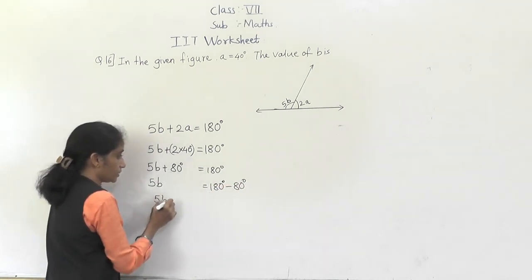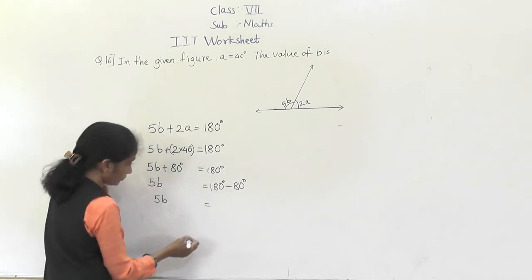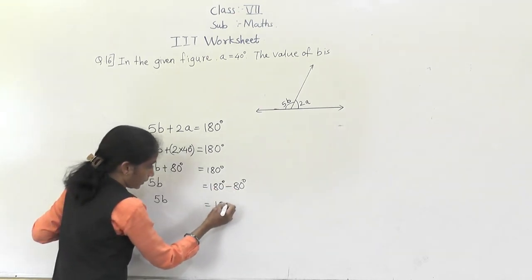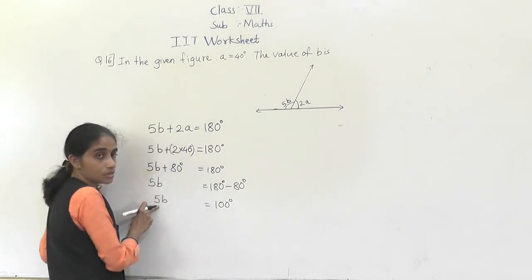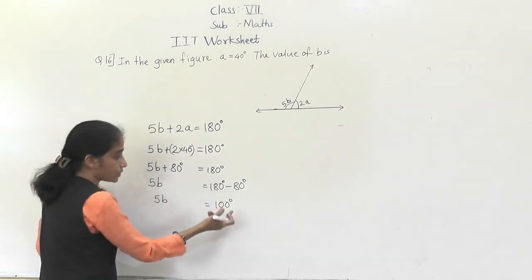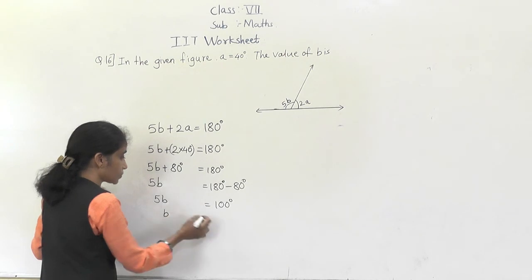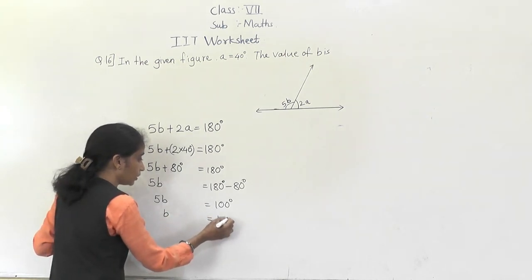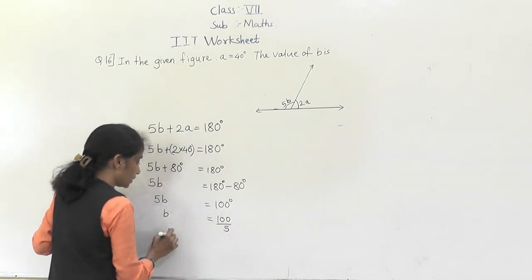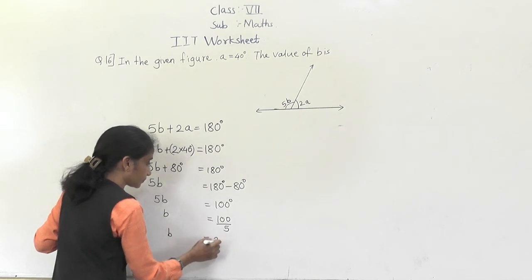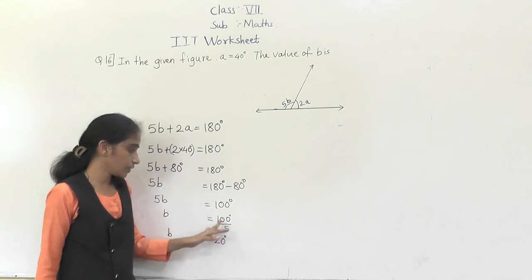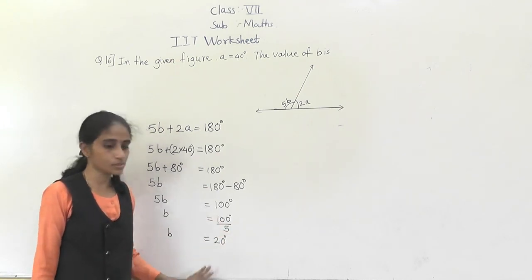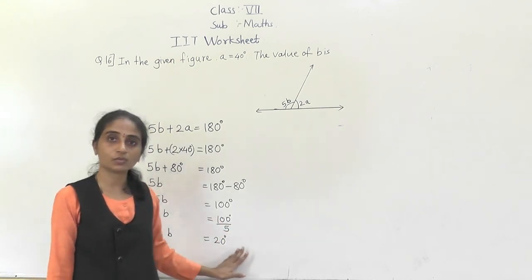5B equals 100 degrees. Since 5 is multiplied, it transfers to the other side as division. So B equals 100 divided by 5, which equals 20 degrees.